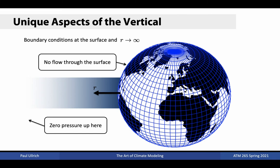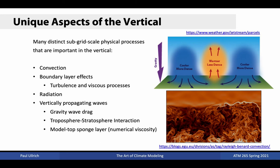Additionally, there are many subgrid-scale processes that are particularly important in vertical columns, including convection, boundary layer effects such as turbulence and viscous processes, radiation, and vertically propagating waves. These waves are responsible for processes such as gravity wave drag. This process was originally missing in global climate models, and as a consequence, these original models had upper-level winds that were too strong. Vertically propagating waves also cause issues when resolved by the dynamical core, so we often need to include additional numerical viscosity near the model top in the form of a sponge layer to prevent unphysical wave reflection.